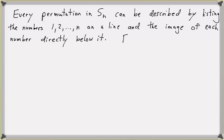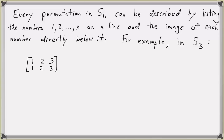Let's look at an example. In S_3, we have the integers one, two, and three being permuted by bijections. You could have the identity permutation — list numbers one, two, and three, and then the images: one gets sent to one, two gets sent to two, and three gets sent to three. This is one way to write the identity permutation.